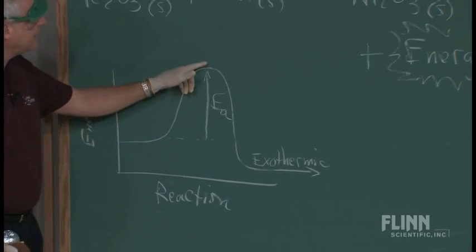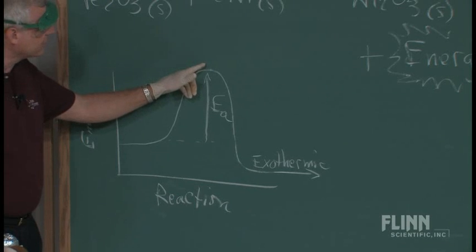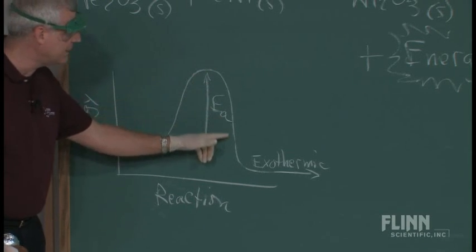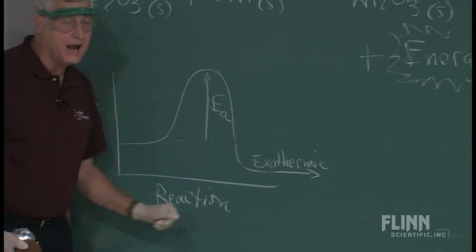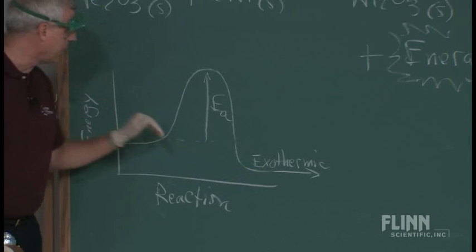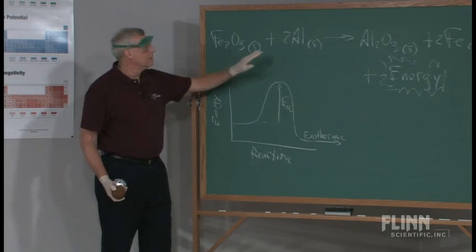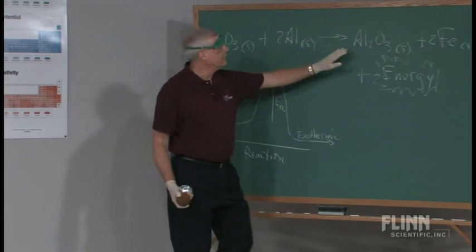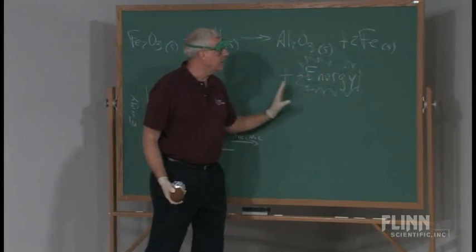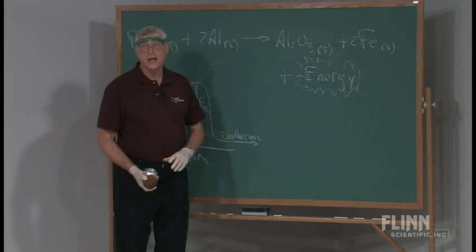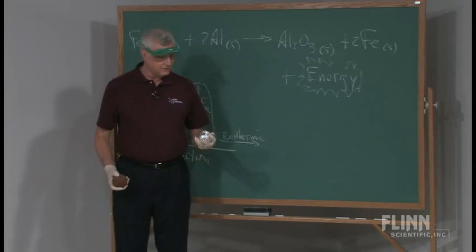So we have to reach a very high level of activation in order for this to take place. And once that it does, we're going to have an exothermic reaction ending up at a lower energy level than where we started. And the reaction that's taking place is iron oxide plus aluminum, making aluminum oxide and iron. And we will have energy that is released and we will see that energy in the form of heat, light and sparks.